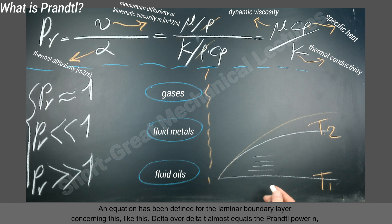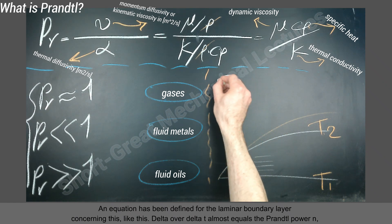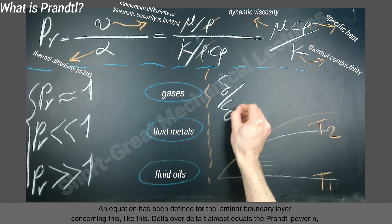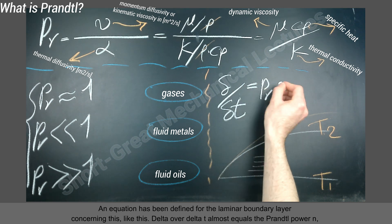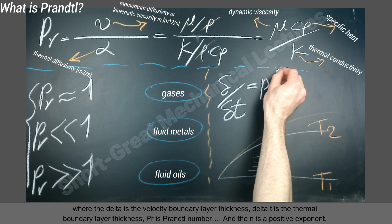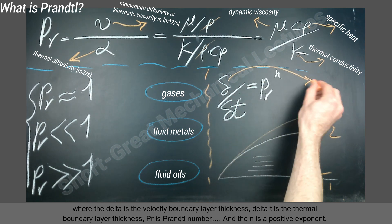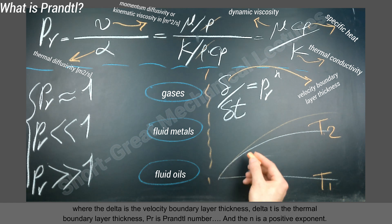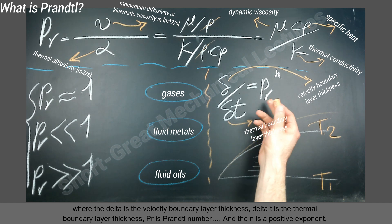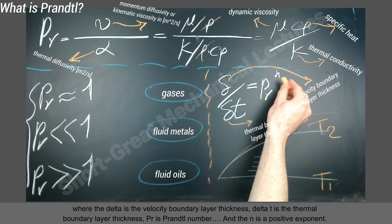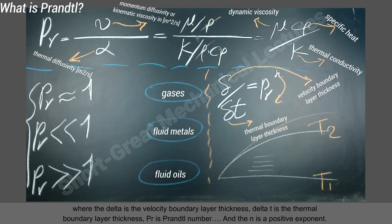An equation has been defined for the laminar boundary layer: δ/δt ≈ Pr^n, where δ is the velocity boundary layer thickness, δt is the thermal boundary layer thickness, Pr is the Prandtl number, and n is a positive exponent.